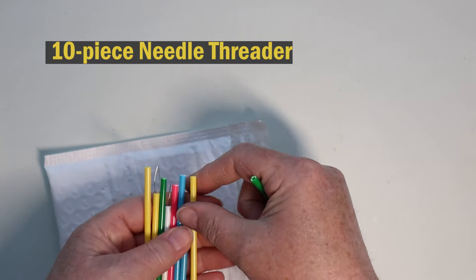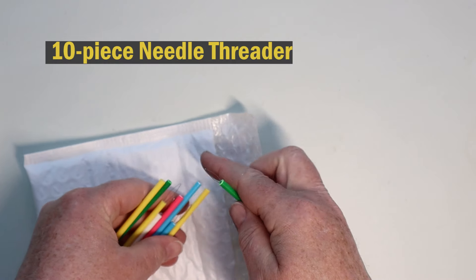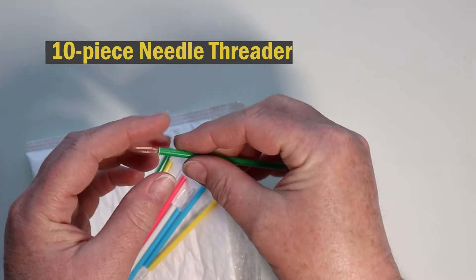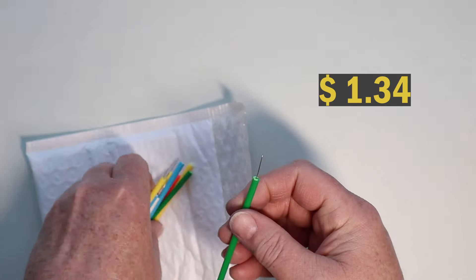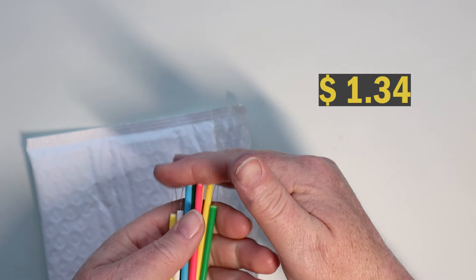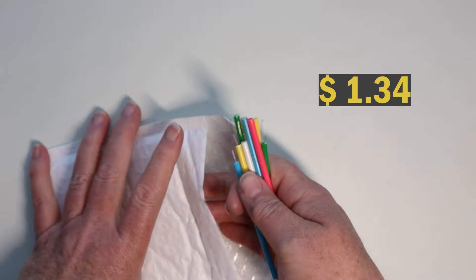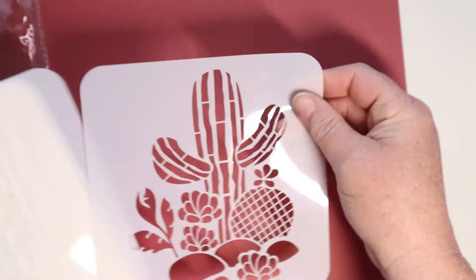Now this is a necessity. This is a threader. So this is really great for putting yarn or floss through your tags and stuff. And these are bigger than the ones you use for your sewing machine. So great deal here.